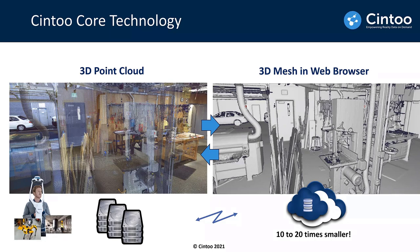We retain the complete accuracy, density, and structure of the project with this transformation, and we can do the inverse: bring the mesh back as a point cloud. That means we can distribute data as a point cloud — for example, an RCP file into Revit, Navisworks, or AutoCAD for scan-to-BIM workflows. You can also download the meshes for clash detection in Navisworks. This point cloud to mesh and mesh to point cloud capability is very unique to Sintu Cloud.